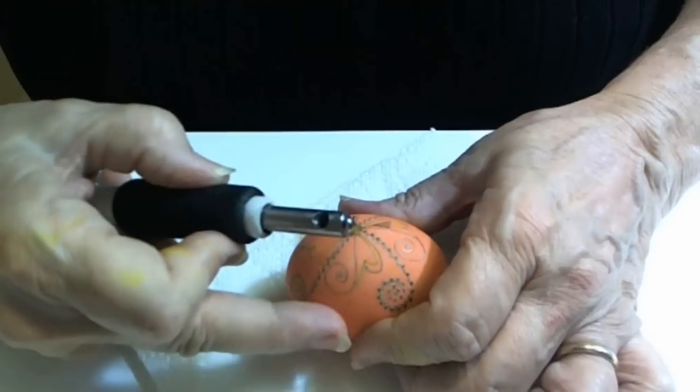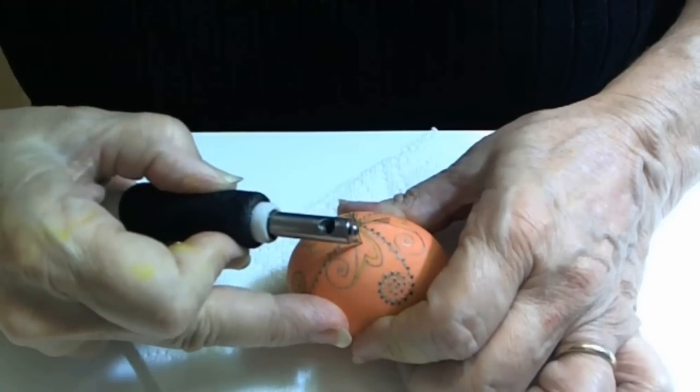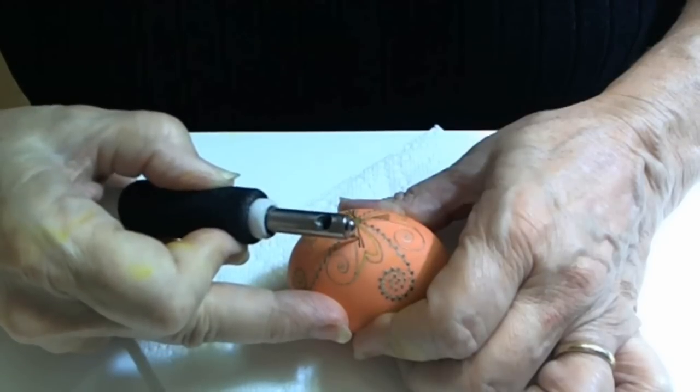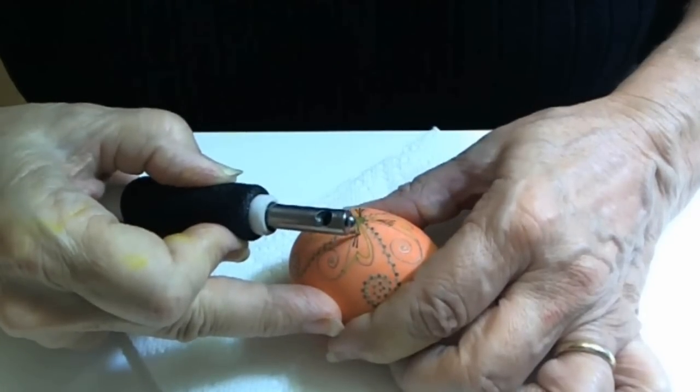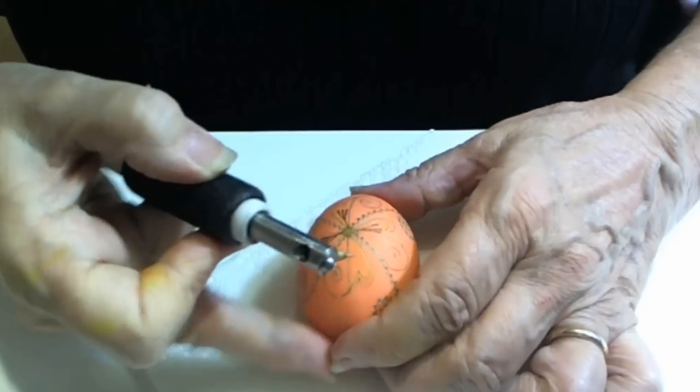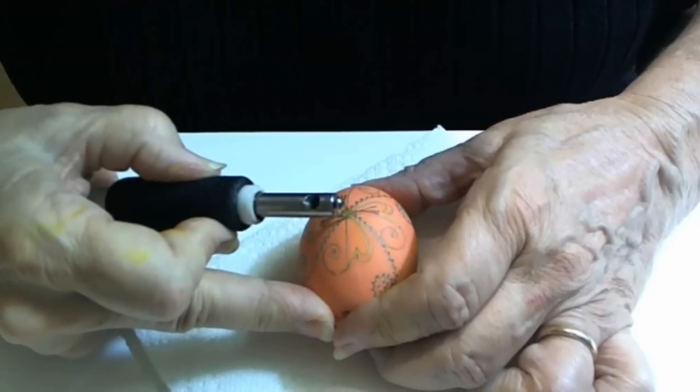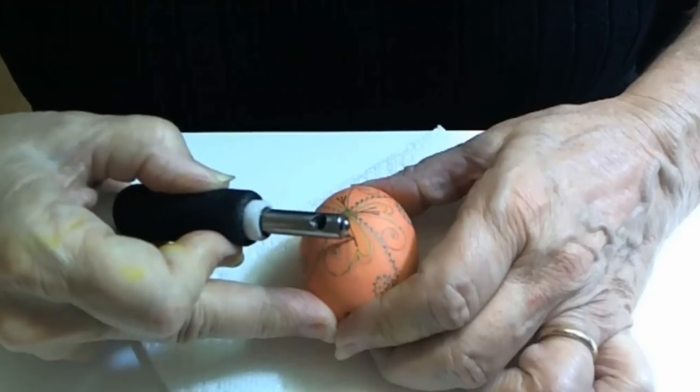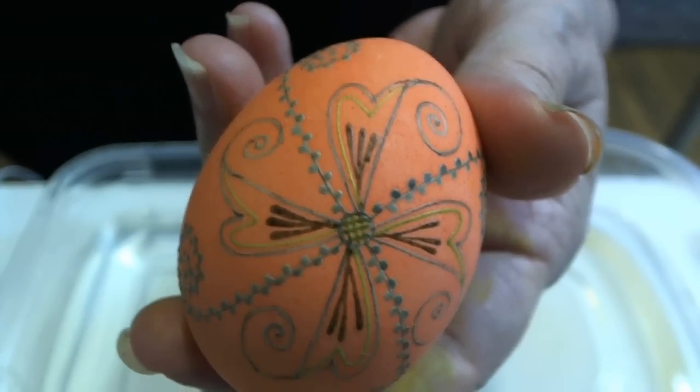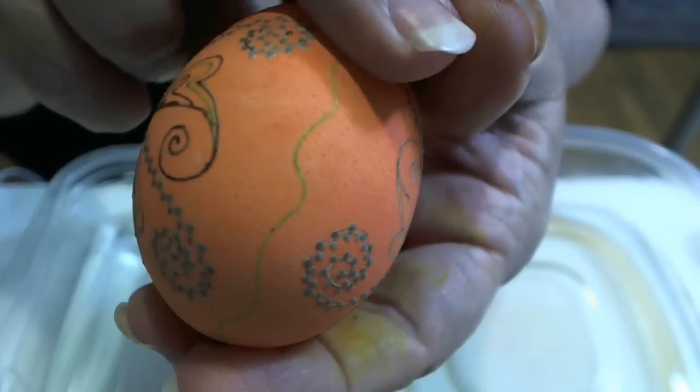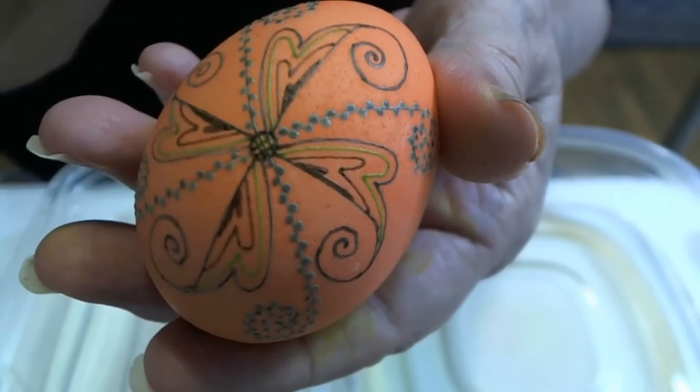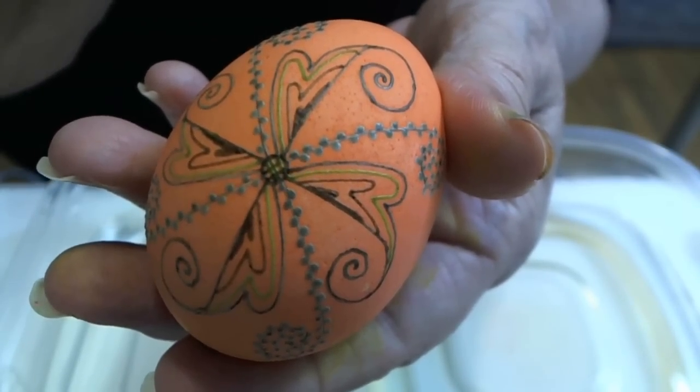I will do this on this side of the egg and also on the other side. However, you don't have to. You can change your design on the other side altogether and have a totally different look. I did finish all the orange waxing and I also decided to do a different design on this side. Now I want to put my egg in green dye.